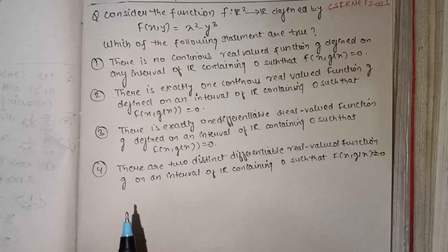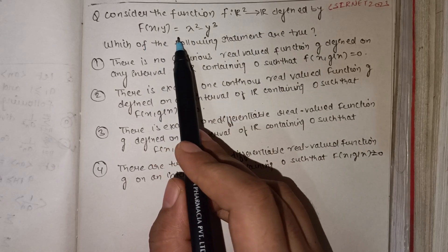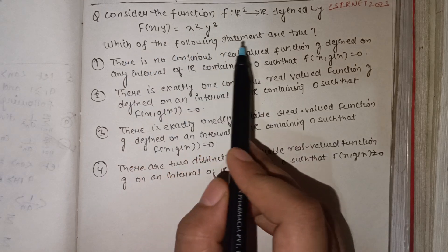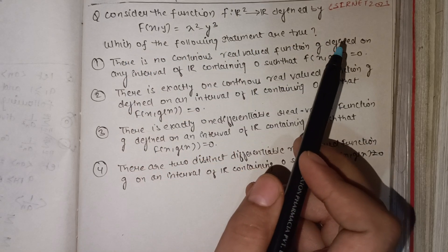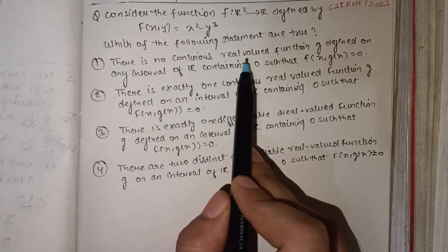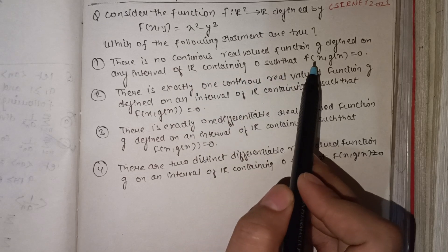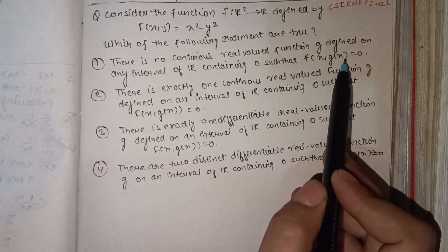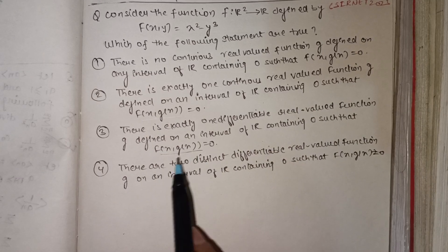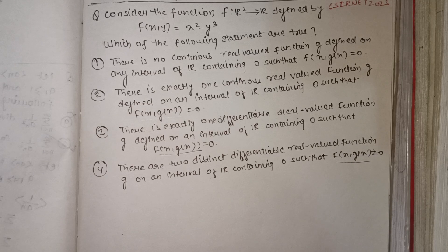Our question is: consider the function f from R² to R defined by f(x,y) = x² − y³. Which of the following statements are true? One option states there is no continuous real-valued function g defined on any interval of R containing zero such that f(x, g(x)) = 0.